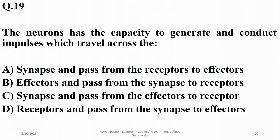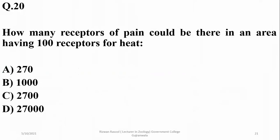Neurons have the capacity to generate and conduct impulses which travel across synapses and pass from the receptors to the effectors. How many receptors of pain could there be in an area having 100 receptors for heat?